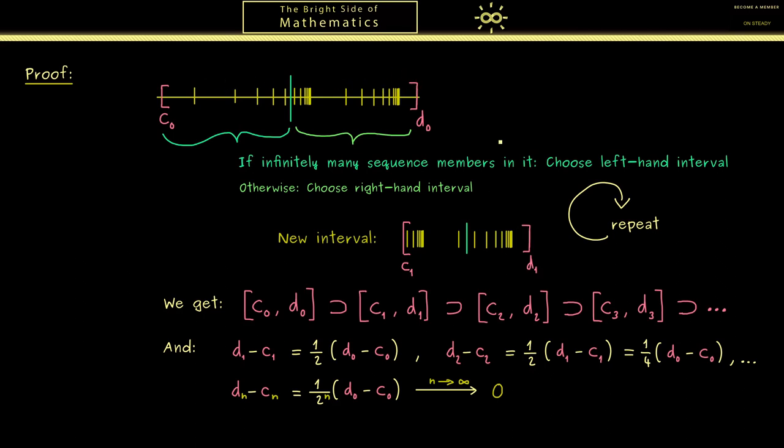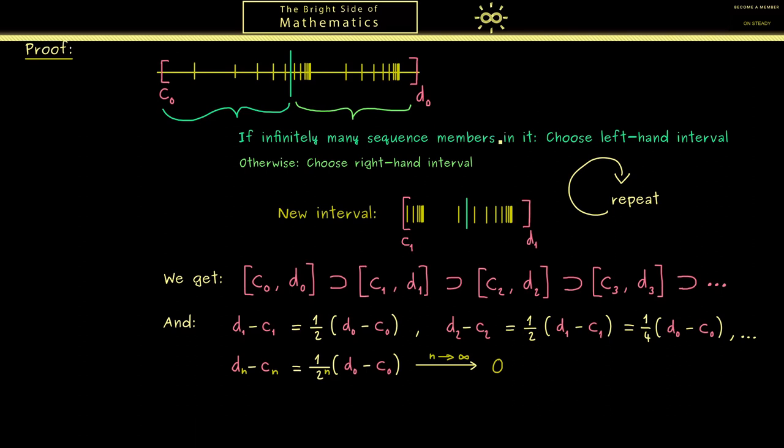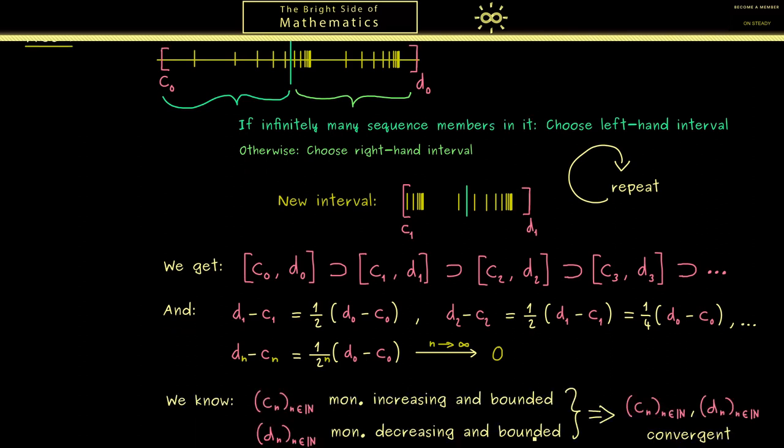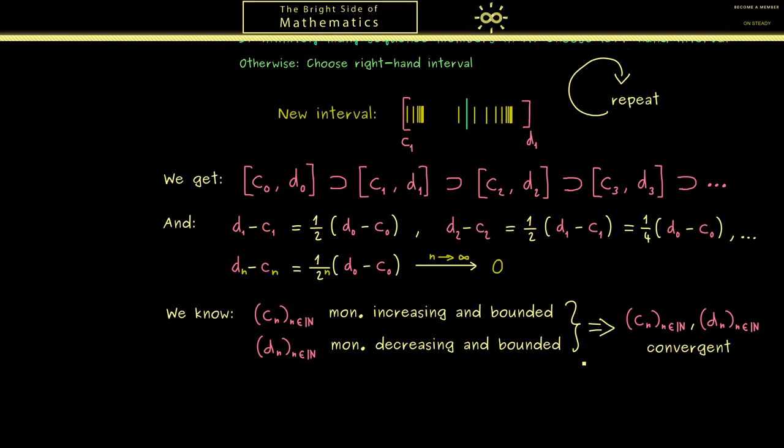And now these things imply that the sequences are also convergent. Please recall this is exactly the monotonicity criterion we discussed in former videos. It's important because we can use it very often as you can see.